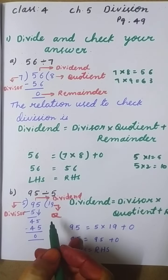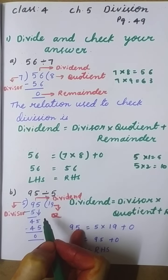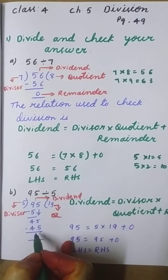Now 5 times 9 is 45. If I take 5 times 10, it would be 50, so we need 45. 45 minus 45, we get 0. The remainder is 0.